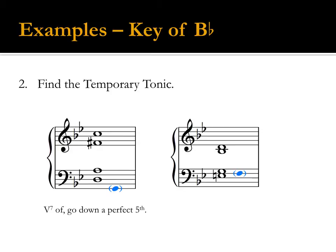This chord is a half-diminished seventh. Go up a minor second from the root of the seven chord, because it is the leading tone of the temporary tonic. E-natural is the leading tone to F, so F is the temporary tonic.